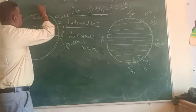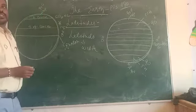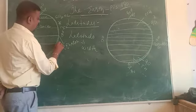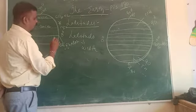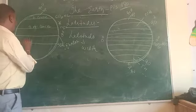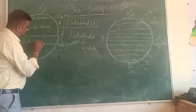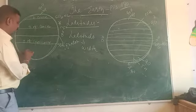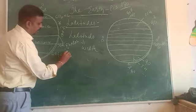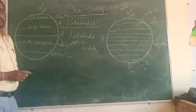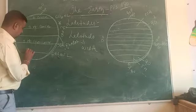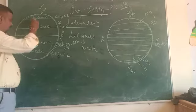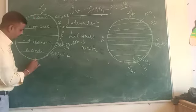The North Pole is at 90 degrees north. Coming to the south: 23.5 degree south latitude is called the Tropic of Capricorn, and 66.5 degree south latitude is called the Antarctic Circle. The South Pole is at 90 degrees south.